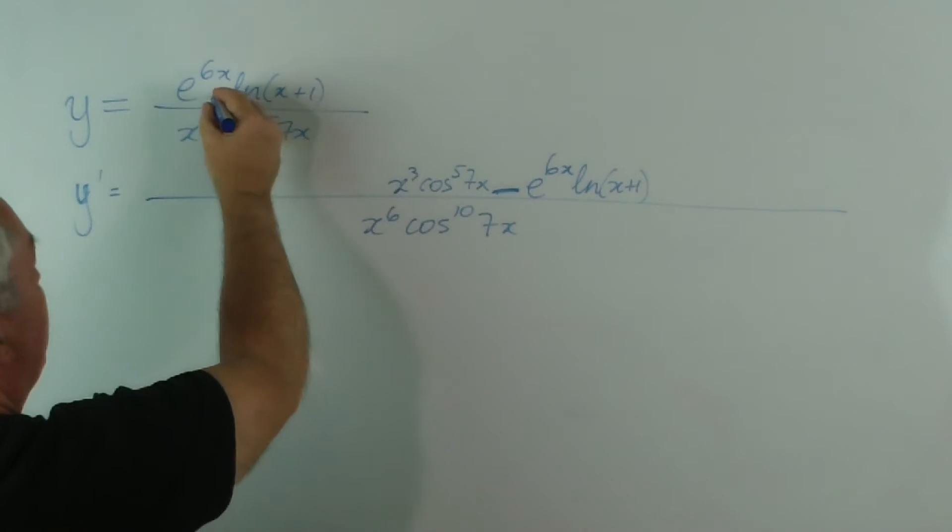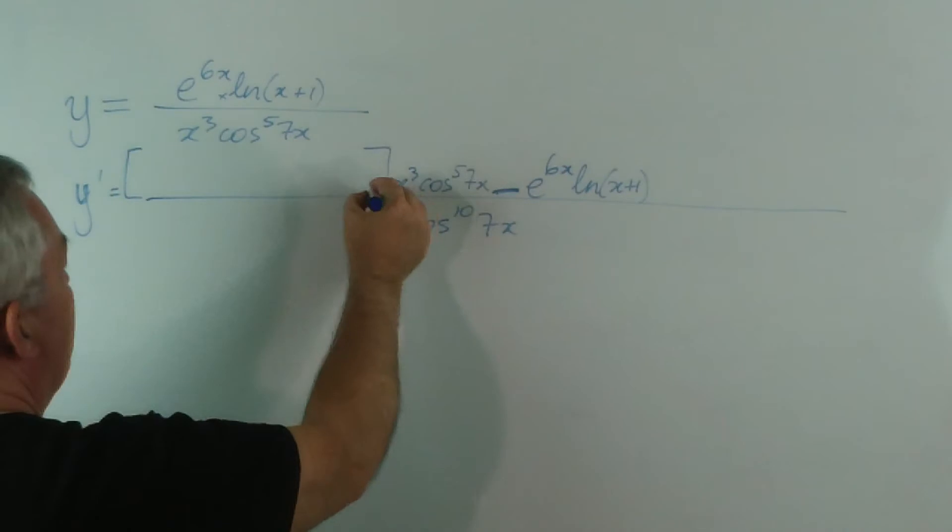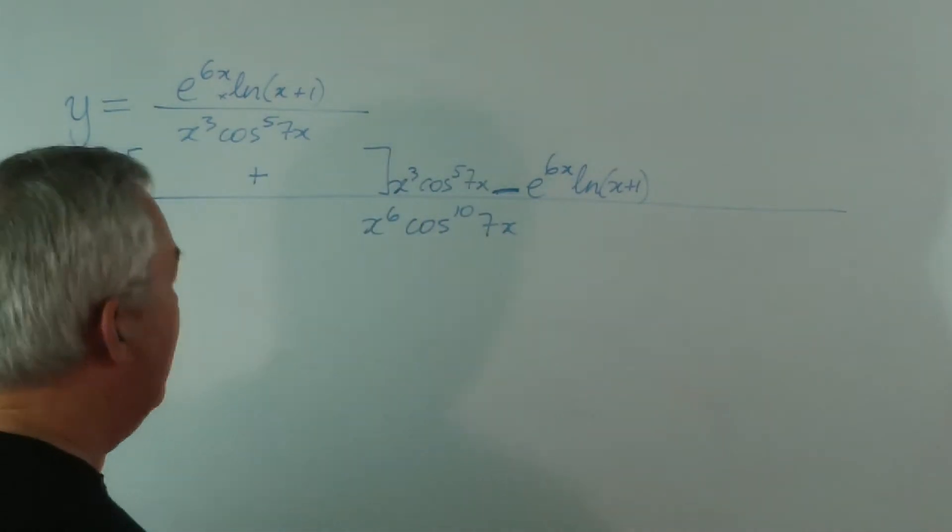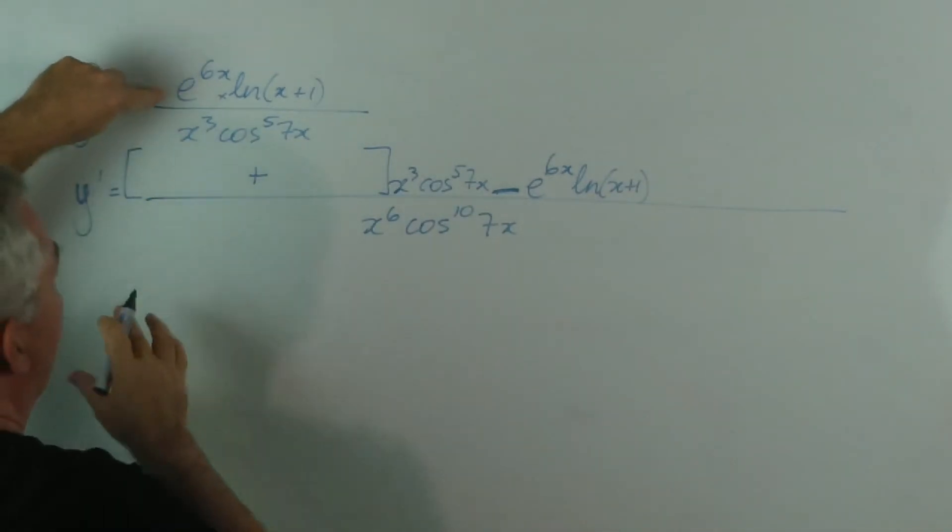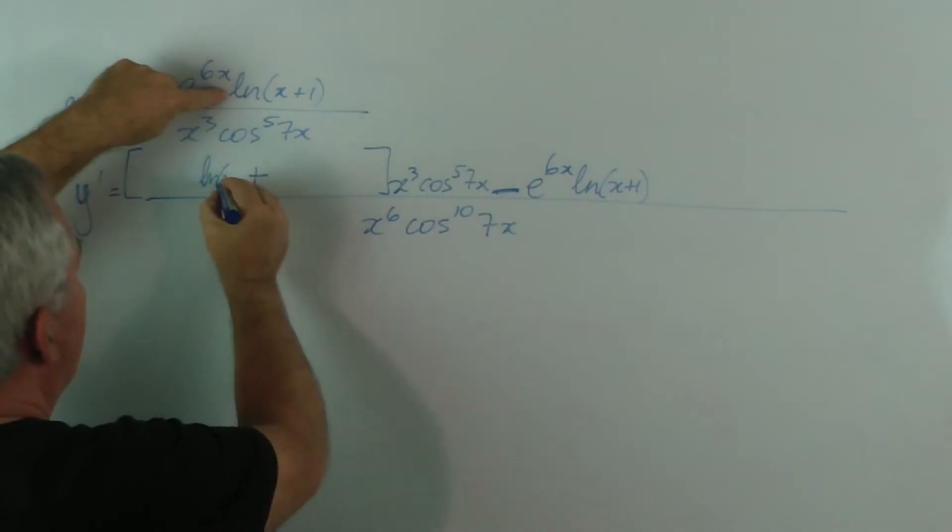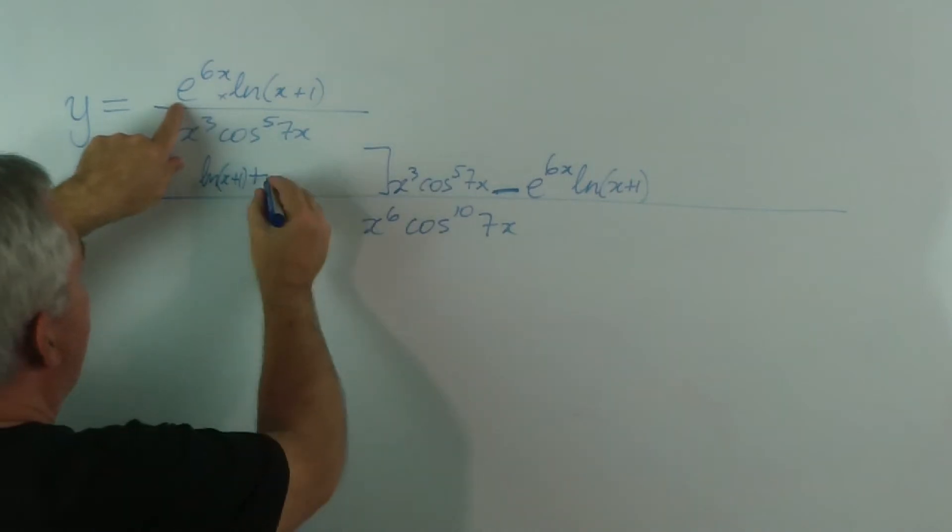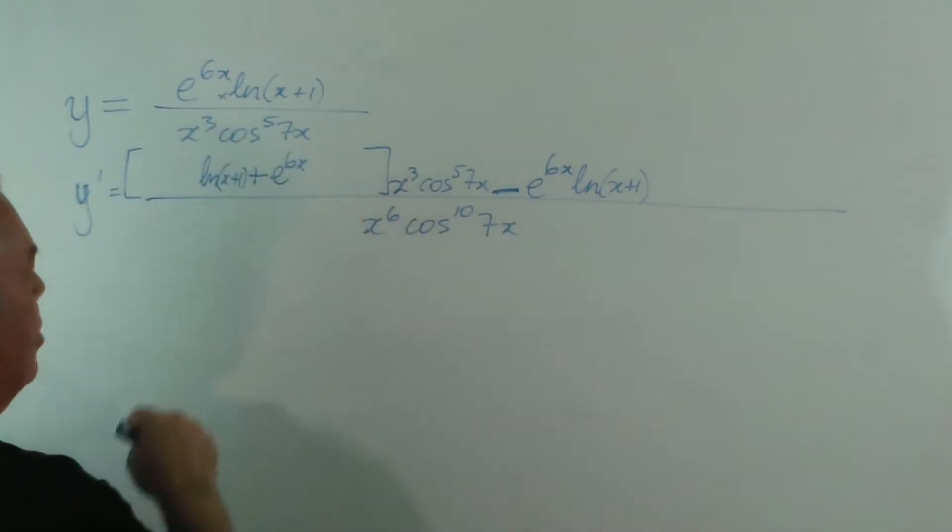we have a product of two functions, it's a product rule. So, I know that I'm going to have two expressions added together. In fact, I know more than that. I know that I'm going to find the derivative of the e^(6x) and multiply it by log. And then I'm going to leave the e^(6x) alone and write down the logarithm of x+1 there.